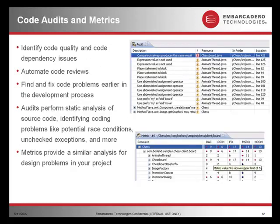Code audits and metrics actually allow you to identify code quality issues and dependency issues. This allows you to do things like automate your code reviews and find and fix problems earlier in the development lifecycle. The audits themselves perform static analysis of source code, identifying coding problems like potential race conditions, unchecked exceptions, and more.